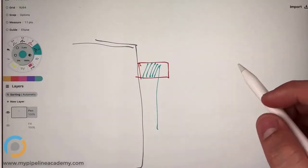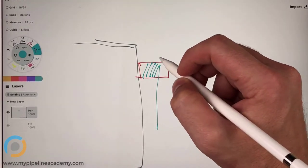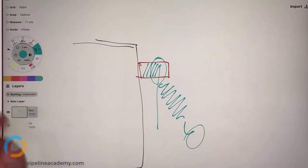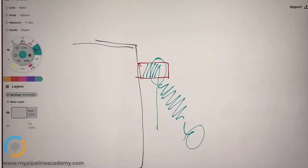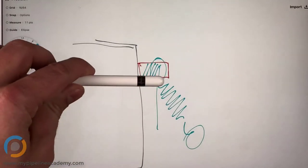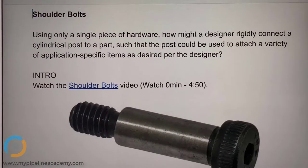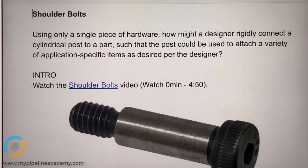Or maybe you have an extension spring, so your eye of the extension spring, then you've got that and the other eye. But that's all it was. It was a post, something like that sticking off. So how might a designer rigidly connect a cylindrical post to a part such that the post could be used to attach a variety of locations?